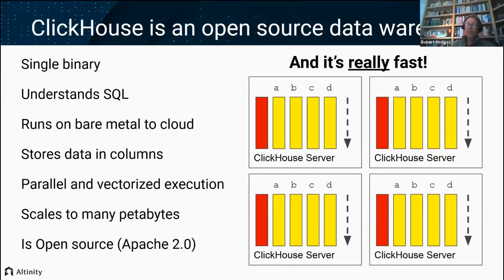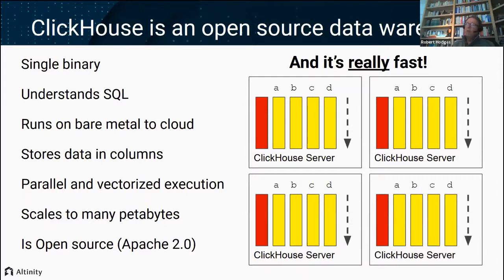You can think of ClickHouse as kind of the MySQL of data warehouses. Like MySQL, it has a single binary, it understands SQL, it's pretty portable, and runs on everything from bare metal to clouds — anywhere Linux does. Where it departs from MySQL is that it stores data in columns instead of rows. You can think of every column being stored as an array, and whenever you're reading or writing data you're always doing sequential I/O. ClickHouse is also very good at parallelizing queries. Within a single host, ClickHouse is very good at breaking up these columns into pieces and farming them out to all available CPUs or cores.